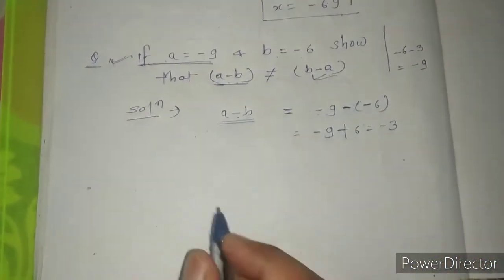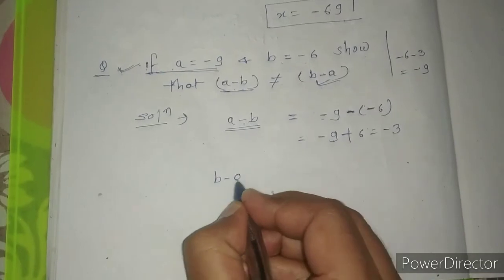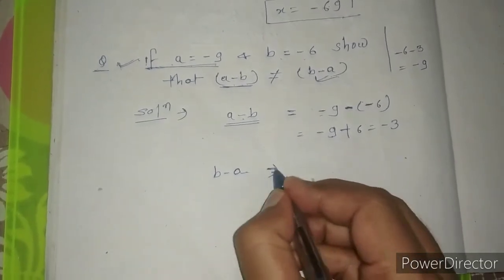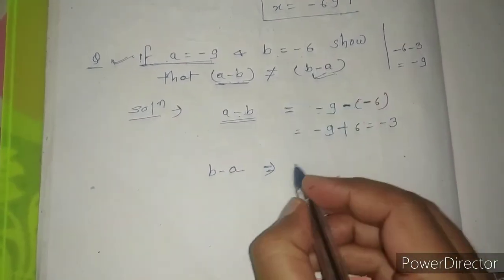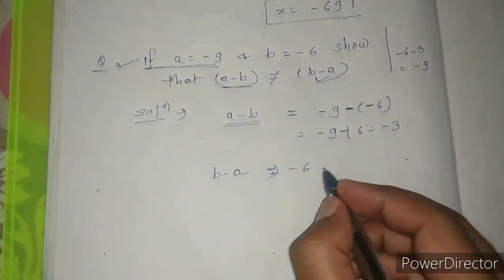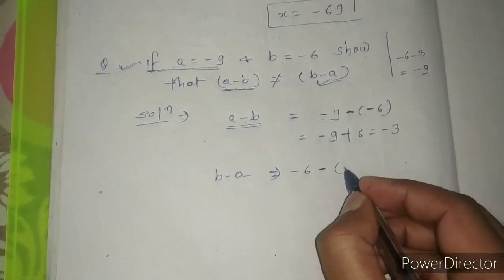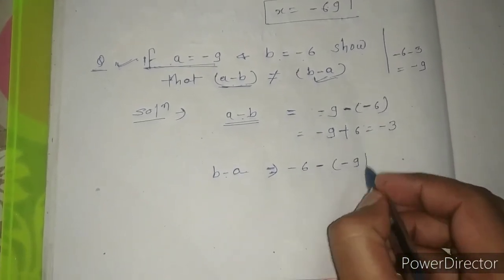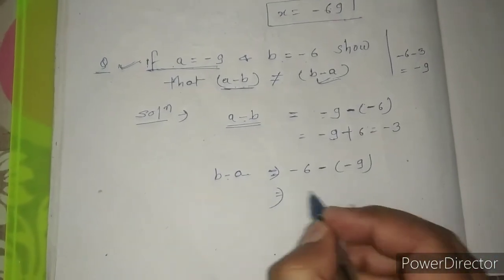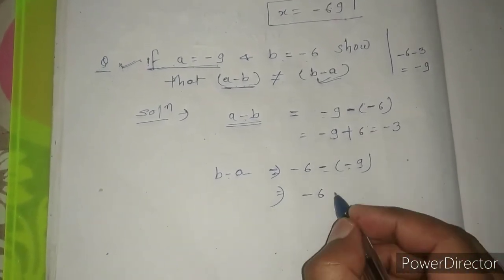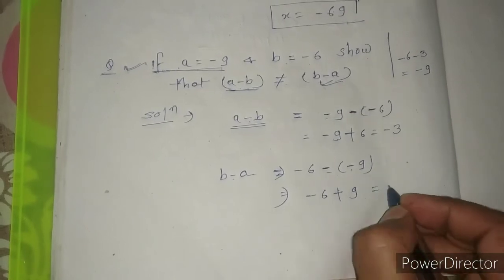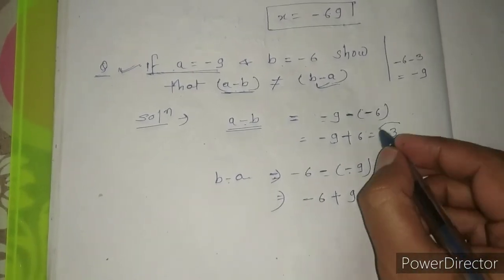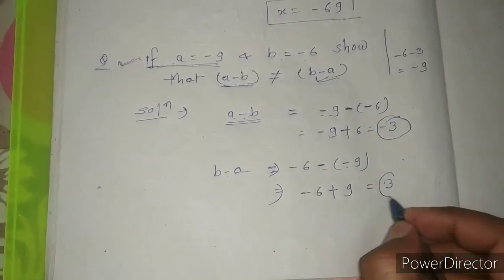Now we will find b minus a. So b is minus 6, then minus, and a is minus 9. This is minus 6 minus minus, which becomes plus 9. So 9 minus 6 equals 3.